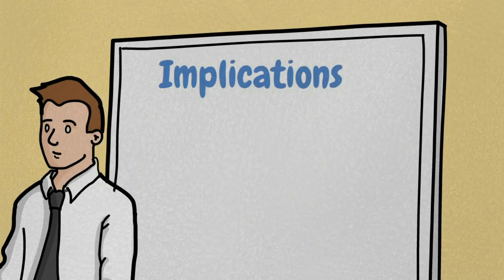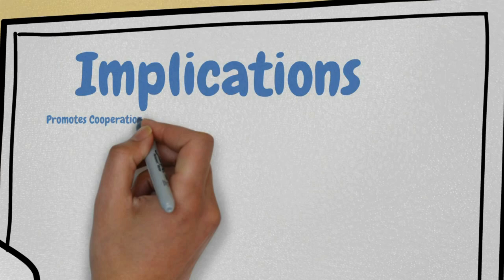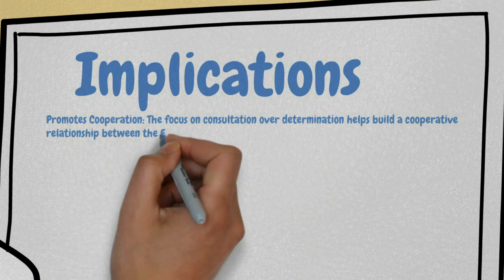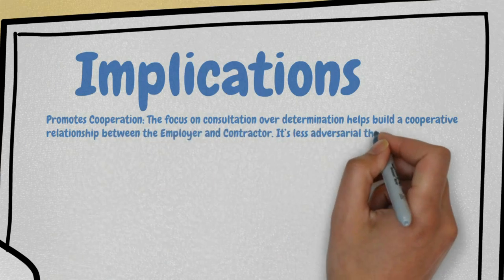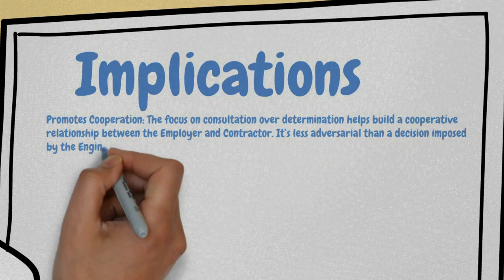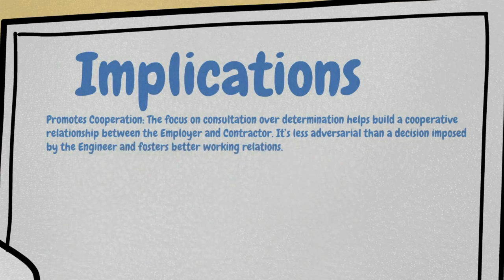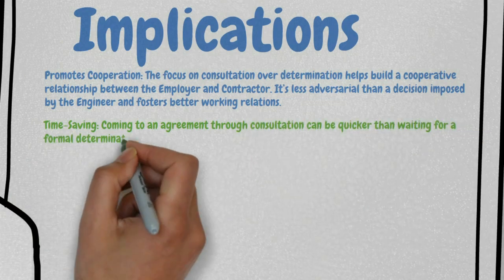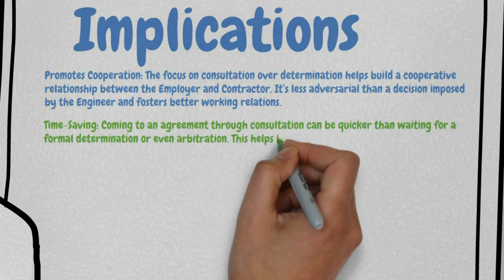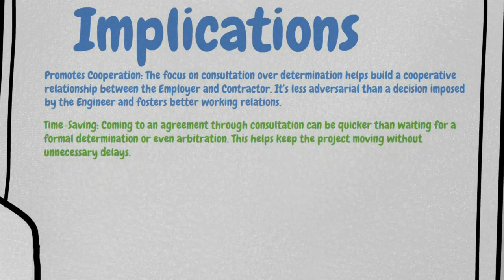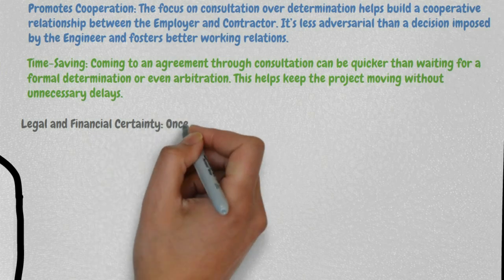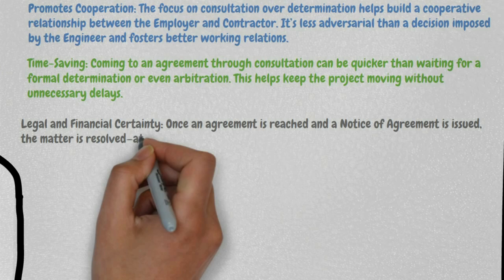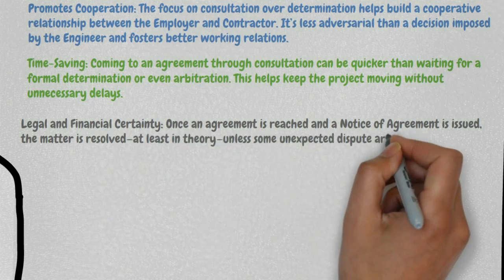Implications of this clause. First, it promotes cooperation — the focus on consultation over determination helps build a cooperative relationship between the employer and contractor; it's less adversarial and fosters better working relations. Second, it saves time — coming to an agreement through consultation can be quicker than waiting for a formal determination or even arbitration, keeping the project moving without unnecessary delays. Third, it provides legal and financial certainty — once an agreement is reached and a notice of agreement is issued, the matter is resolved, unless some unexpected dispute arises later.